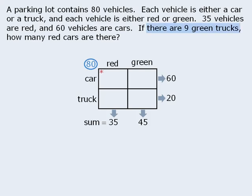We are told that there are 9 green trucks. Since this box is reserved for green trucks, we can add 9 to this box. Now that we know the value of one box, we can complete the rest of the table.